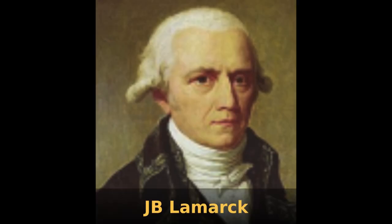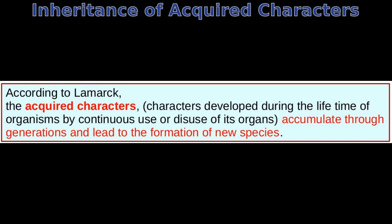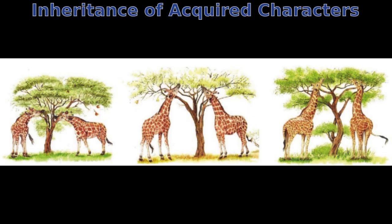J.B. Lamarck, Charles Robert Darwin, and others have tried to explain how evolution occurs. Lamarck explained that acquired characters developed during the lifetime of organisms accumulate through generations and lead to the formation of new species, but Lamarckism was not accepted, as these acquired characters do not change the genes and are thus not inheritable.